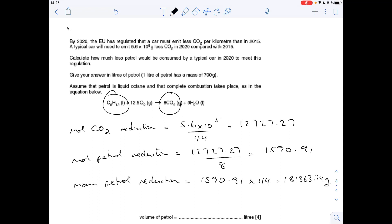To turn that into liters, we're going to use this information here: one liter of petrol has a mass of 700 grams. So if we divide the mass of petrol by 700, we get how many liters that is, and that comes out at 2.59 liters.